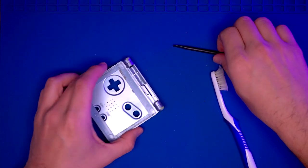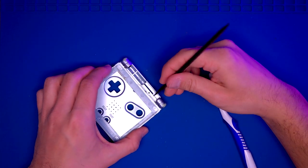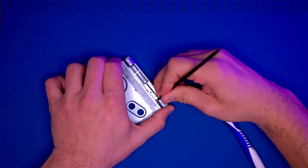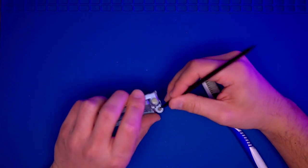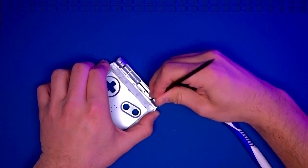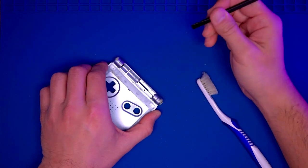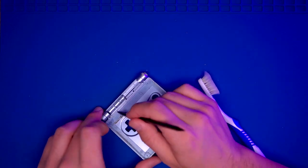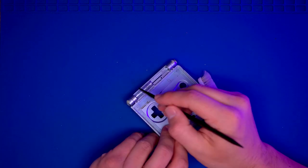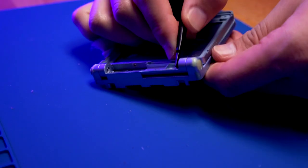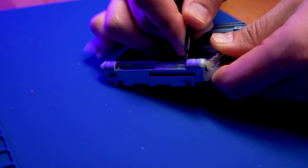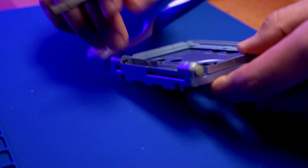Now we're going to remove the hinges for the Game Boy Advance SP because we're going to need to reuse these for the aftermarket shell. Apply a little bit of pressure and it should dislodge it from the hinge. Then we're going to have to open the console to get them out the rest of the way.